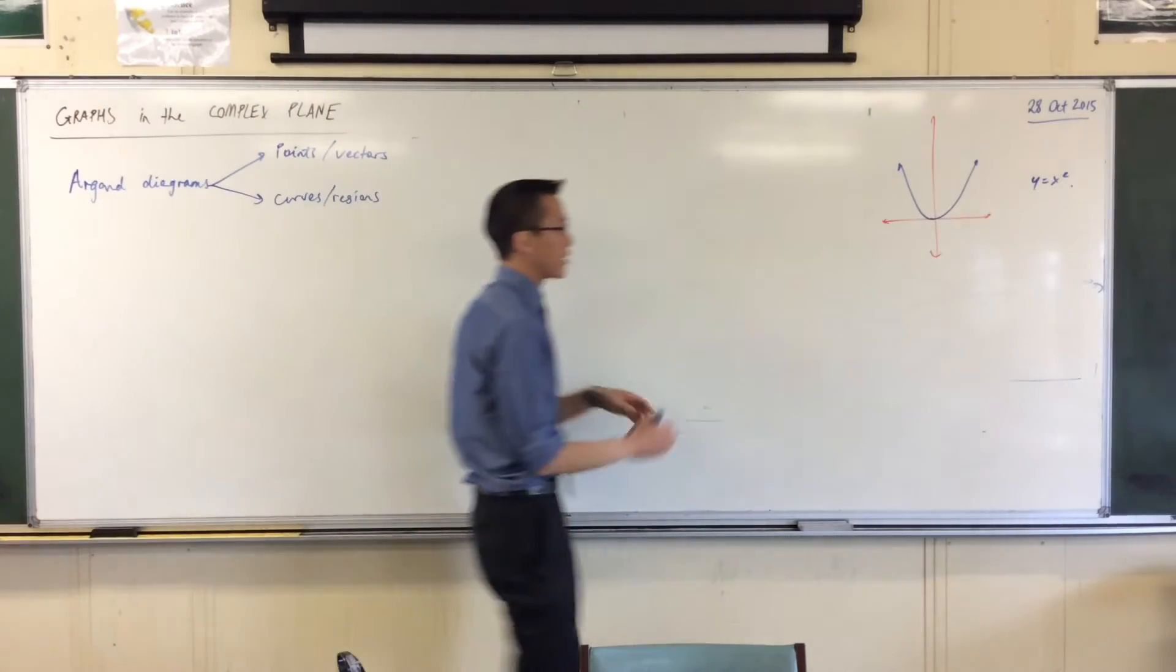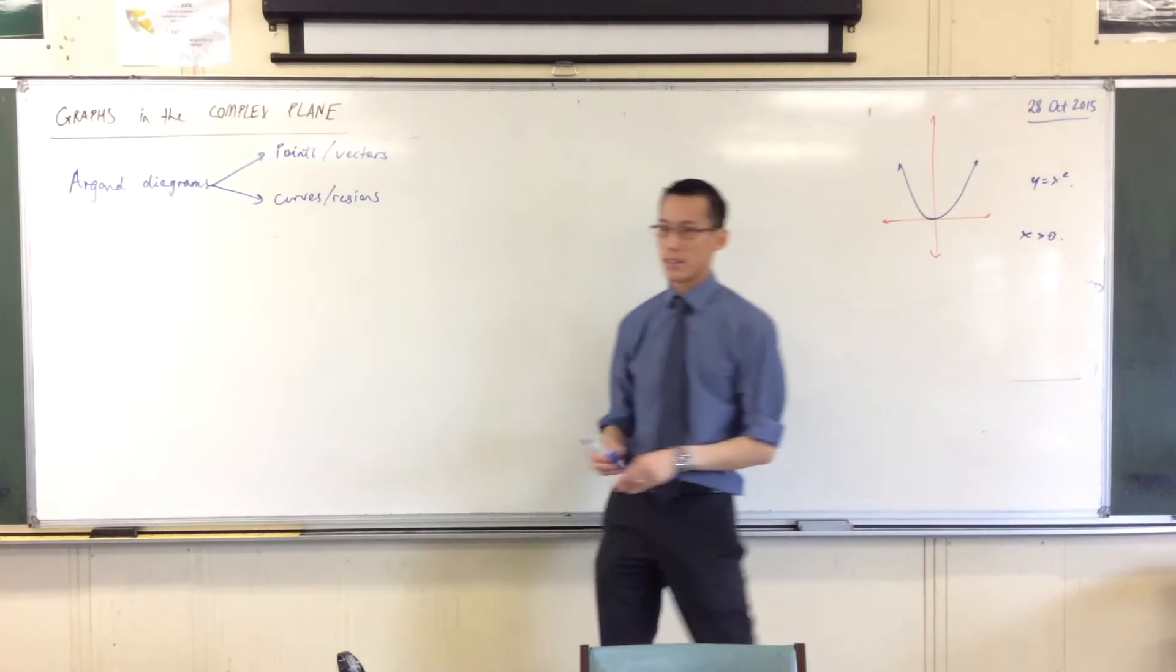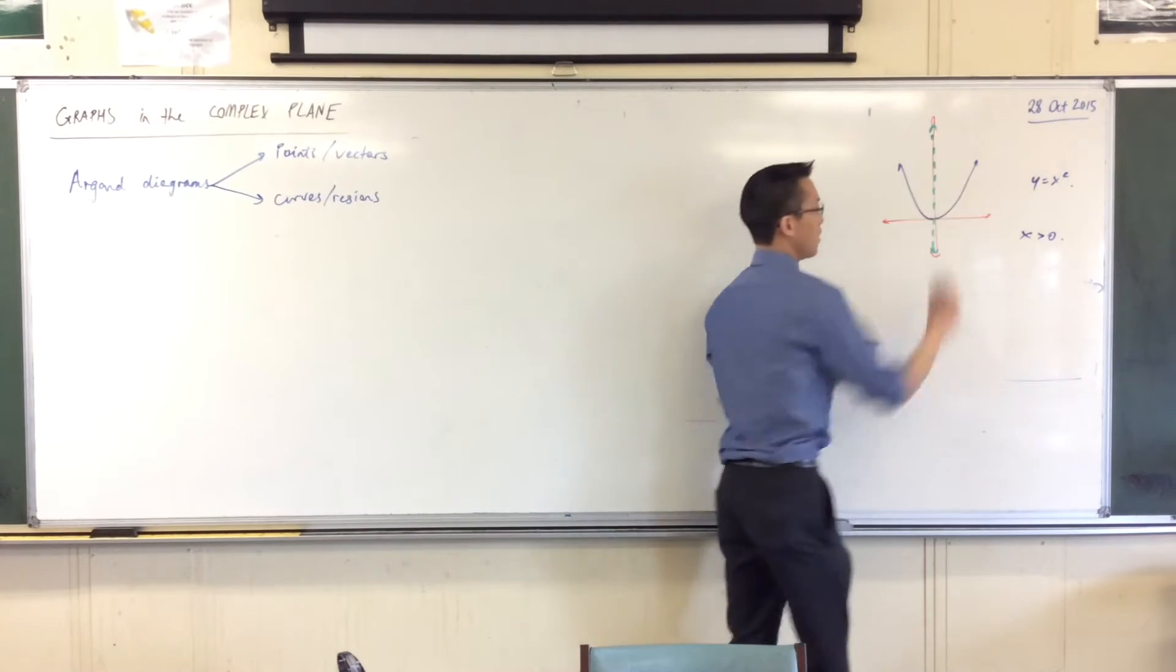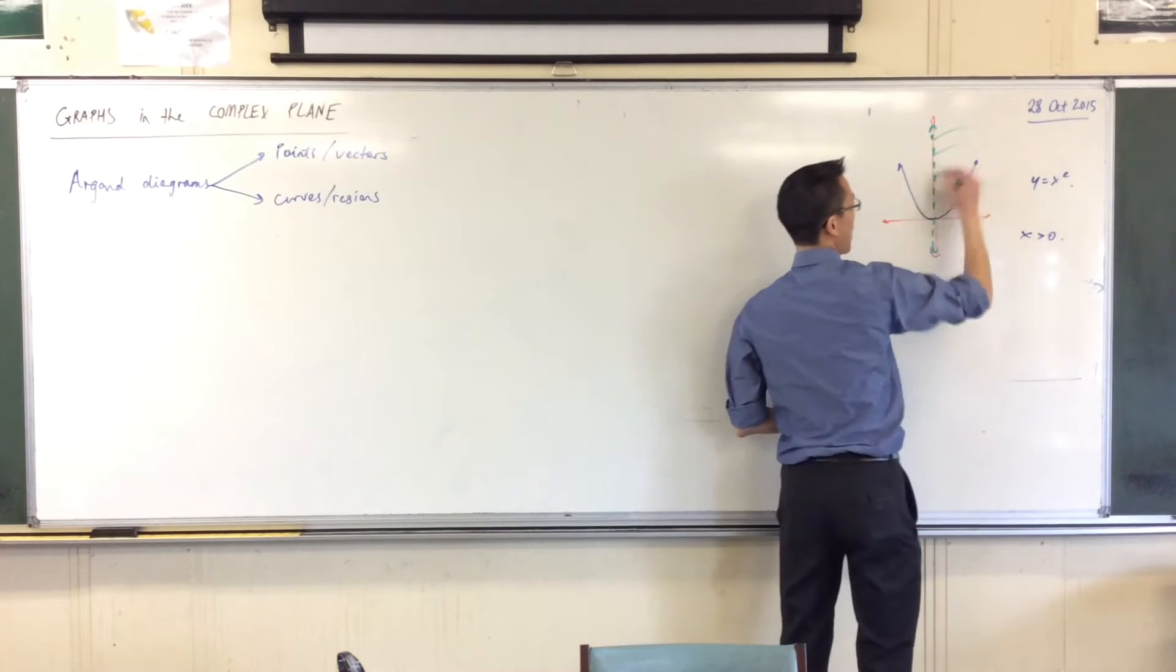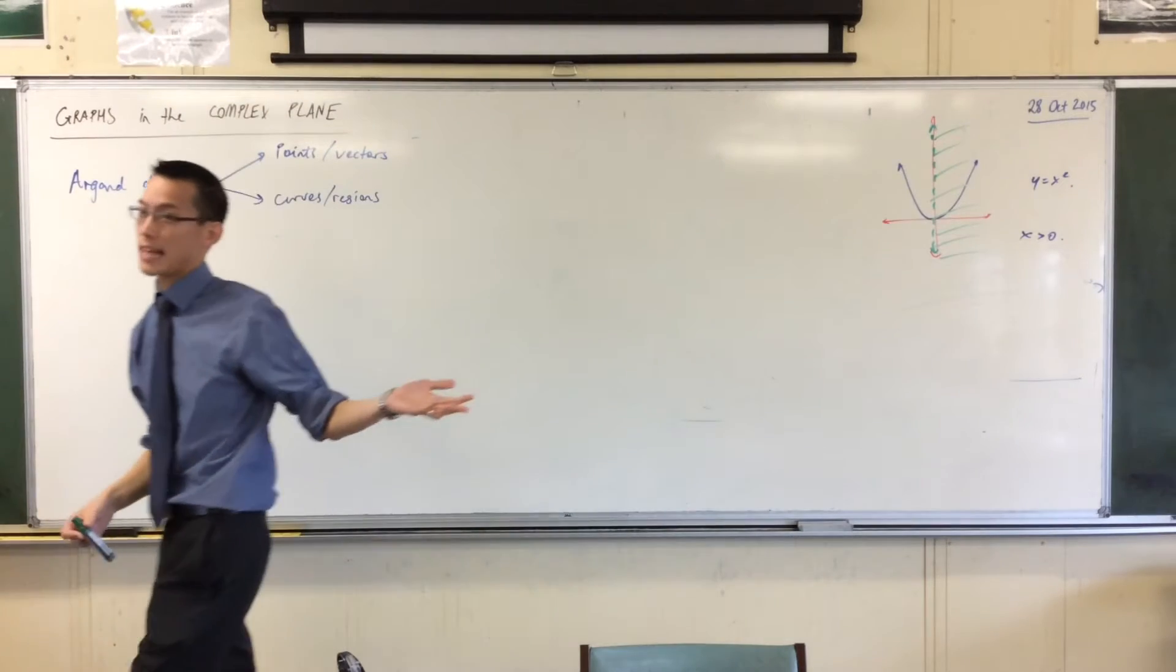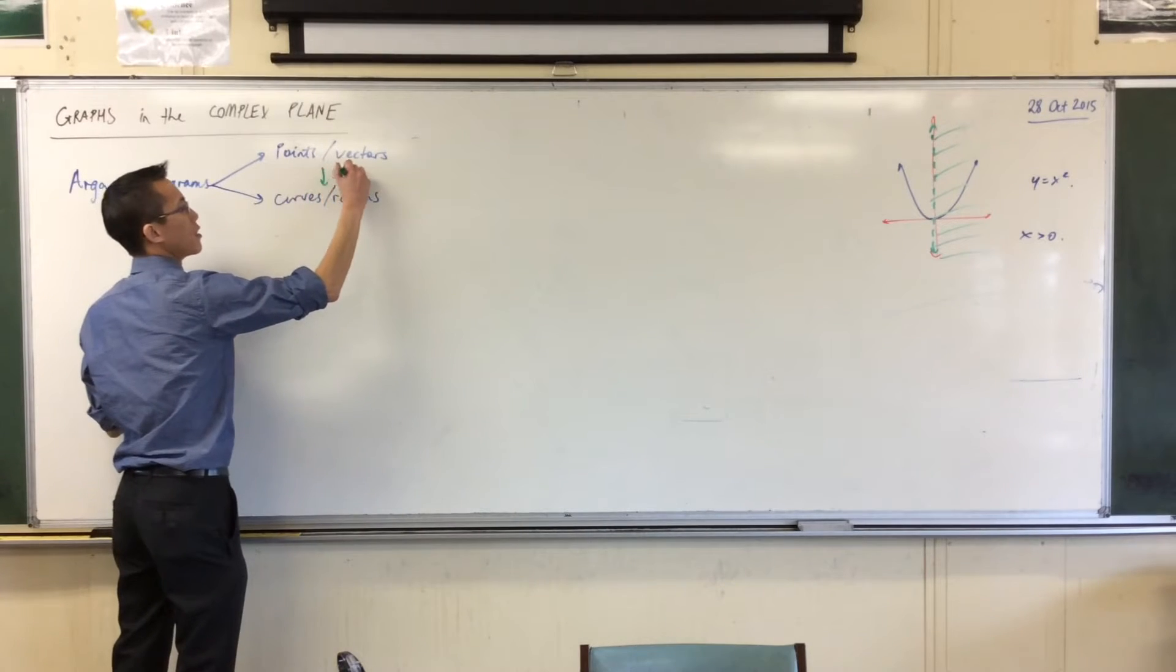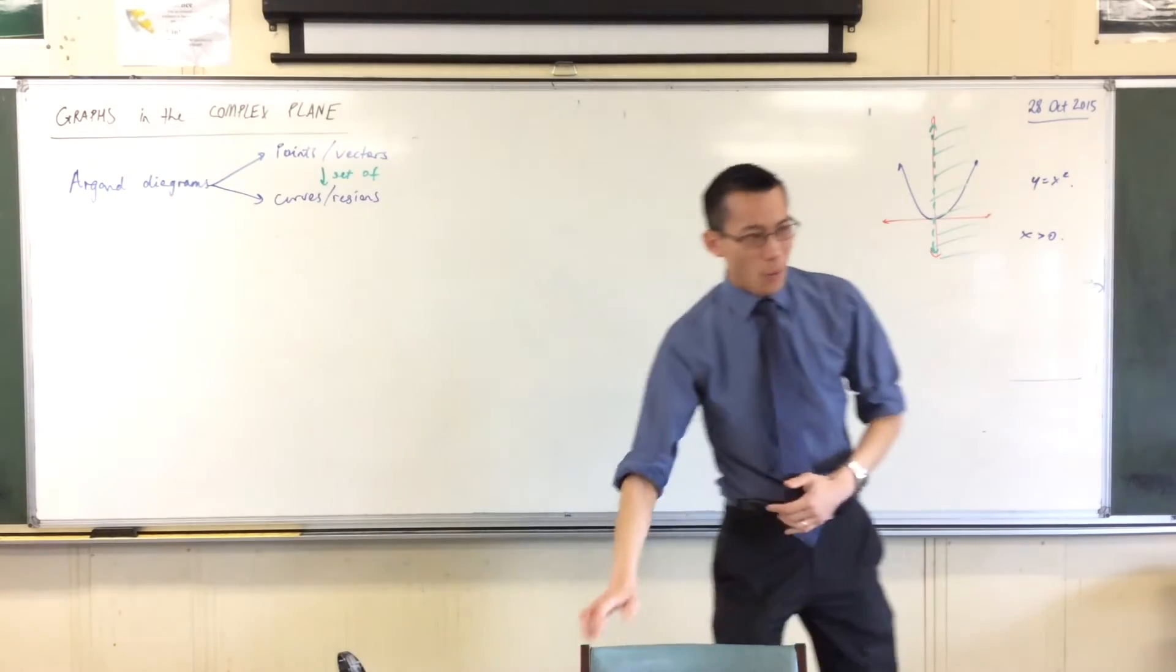I could ask for a region as well. I could say, can you tell me where the set of points is where x is greater than zero? And you would say, well, here's x is equal to zero. I'm not including the boundary, but everything else to the right-hand side, all of those points, every single one of them, satisfies that inequality. So I've got a region, or I've got a curve, which represents a set of these points or vectors.